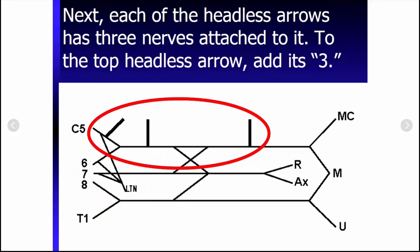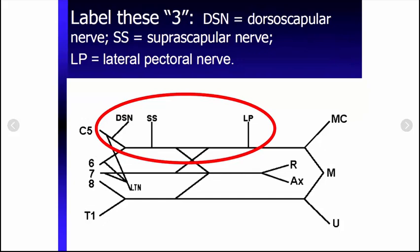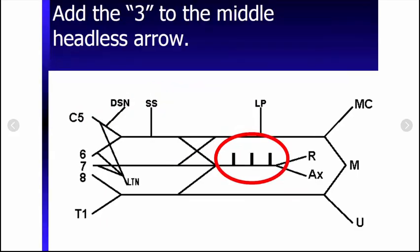I'm going to add in three headless arrows on top. Now three headless arrows, if we add in the labels for them, is dorsal scapular, suprascapular, and lateral pectoral nerve. In this case, we've actually basically already wrapped up what we need for the lateral cord, which means we have our lateral pectoral, the musculocutaneous, and the medial contribution to the median nerve.